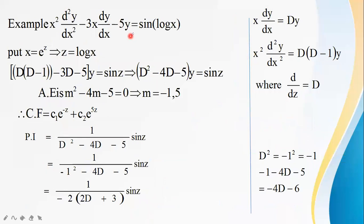See one more example: x² d²y/dx² − 3x dy/dx − 5y = sin(log x). Again we use the same process — put x = e^z or z = log x, so x dy/dx = Dy and x² d²y/dx² = D(D−1)y. Substituting: D(D−1) − 3D − 5 of y = sin z. Simplifying: D² − 4D − 5 of y = sin z.